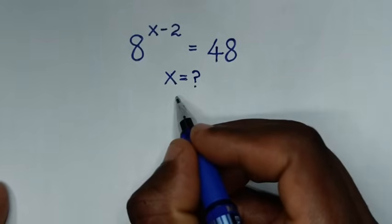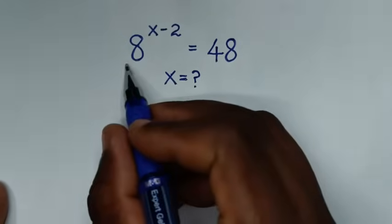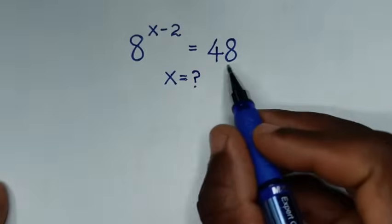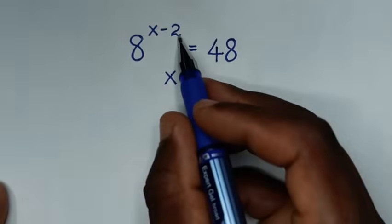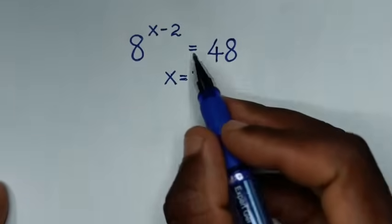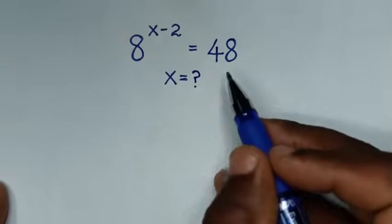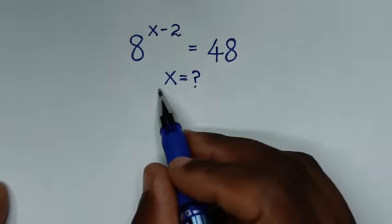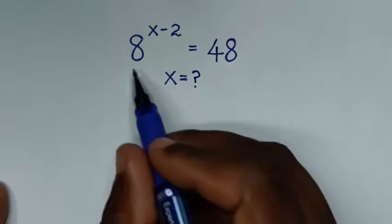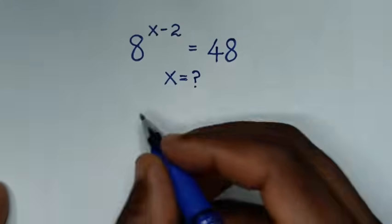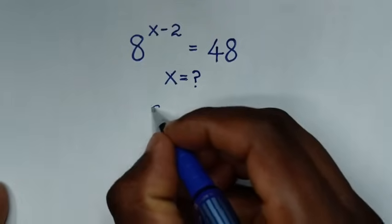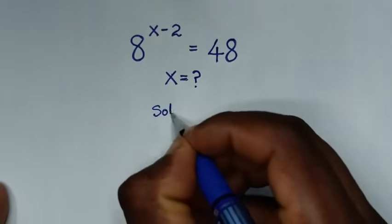Hello, you are welcome to solve this math problem, which is 8 to the power of x minus 2 is equal to 48. To find the value of x from this equation, now solution.